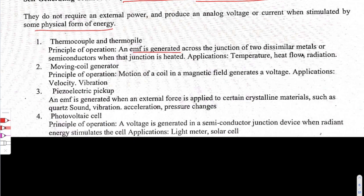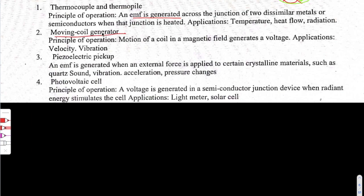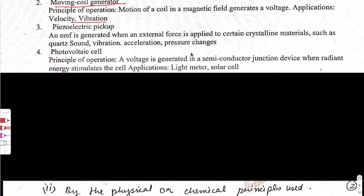An example of a self-generating transducer is the thermocouple or thermopile: an EMF is generated across the junction of two dissimilar metals. Another example is the moving coil generator, where motion of a coil in a magnetic field generates a voltage; applications include measurement of velocity and vibrations.